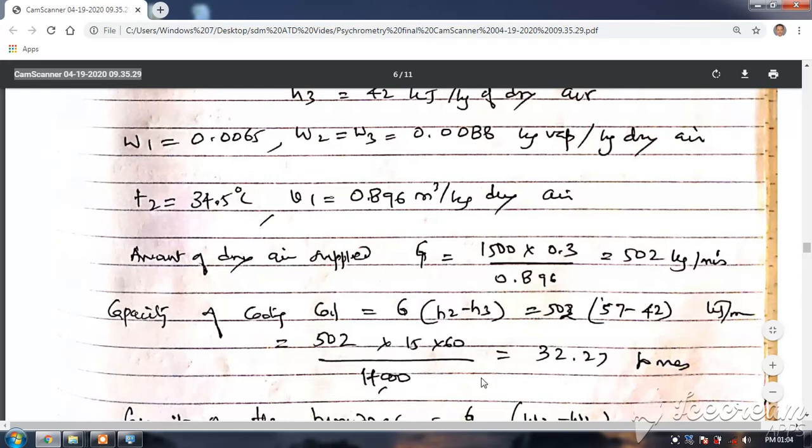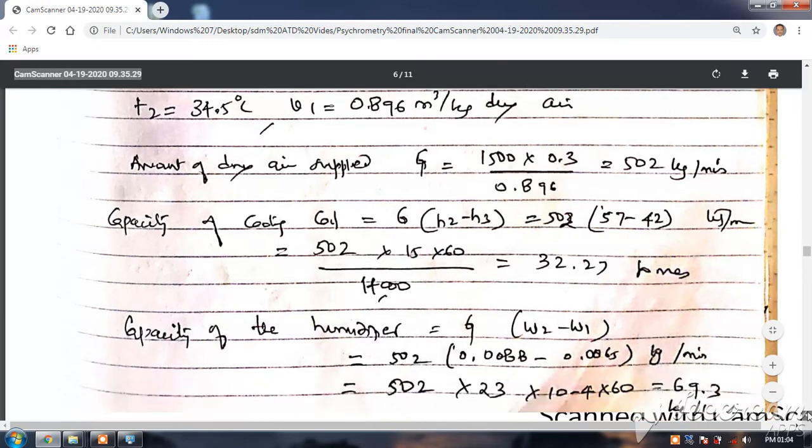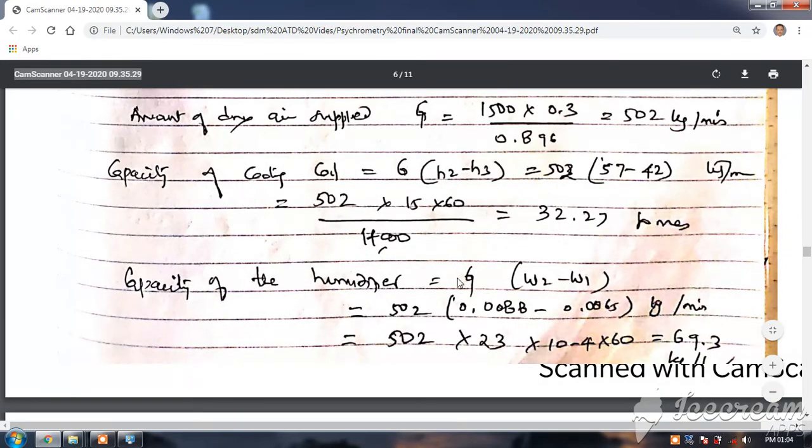Otherwise also you can divide this by 60 and again divide by 3.5, so you will get tons only. And the capacity of humidifier: again this mass of G into omega 2 minus omega 1, so 502 into 0.0088 minus 0.0065, so you will get this as 69.3 kg per hour.